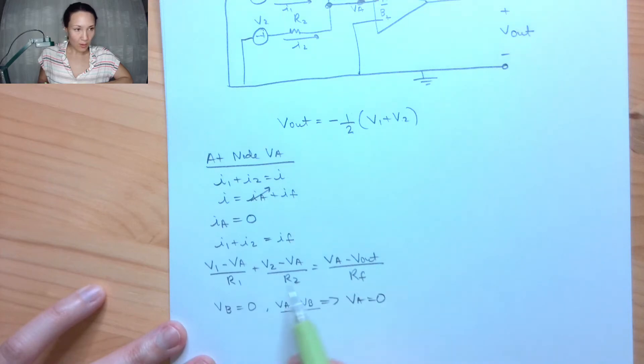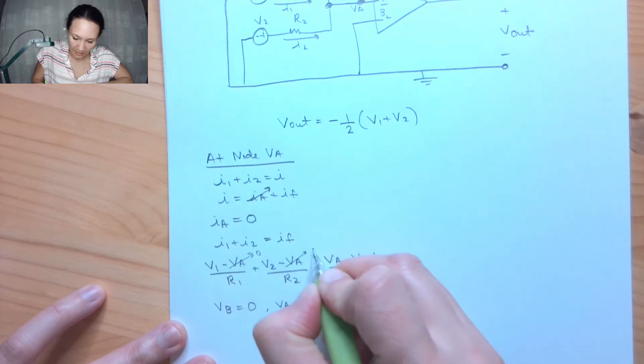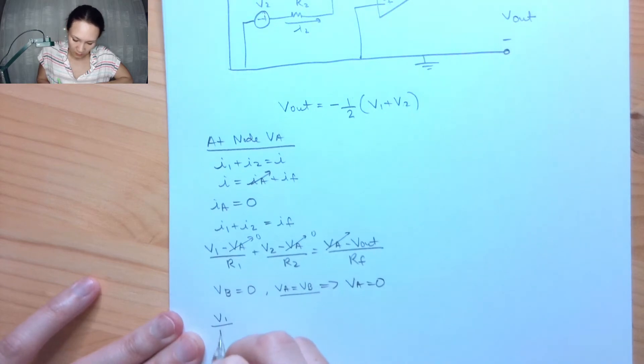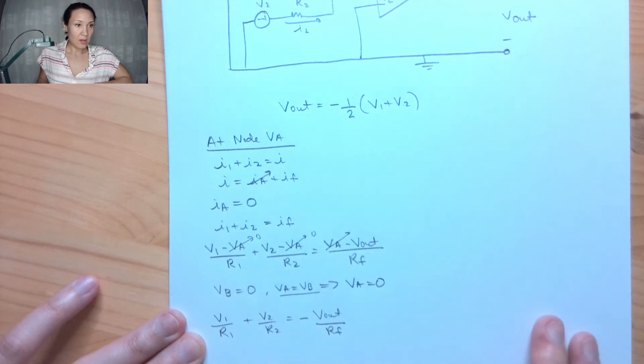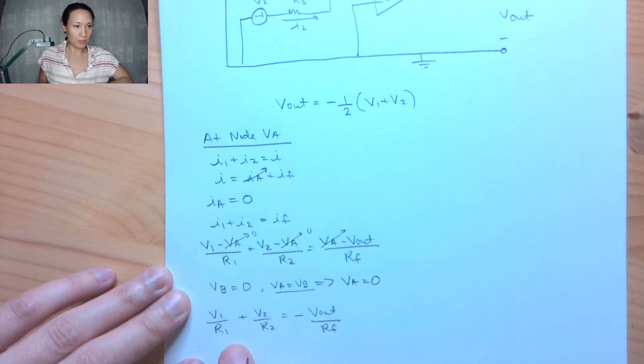Okay, great. So that means in my equation here, everywhere I have a VA, I can just replace that with zero. So my equation becomes V1 over R1 plus V2 over R2 is equal to negative Vout over Rf.